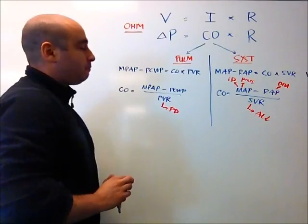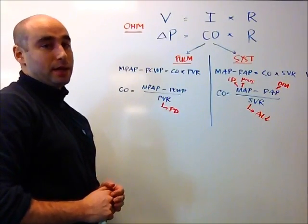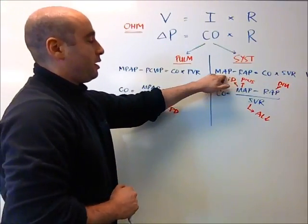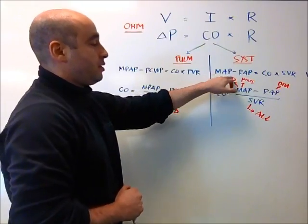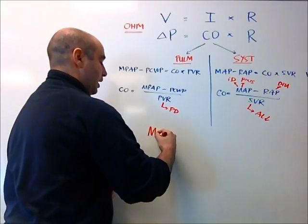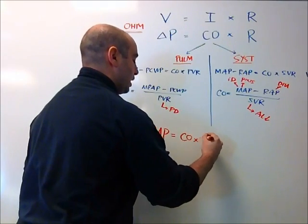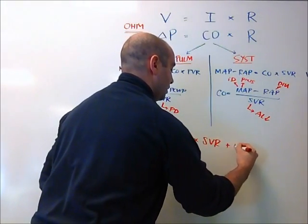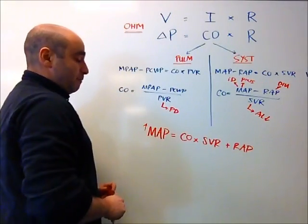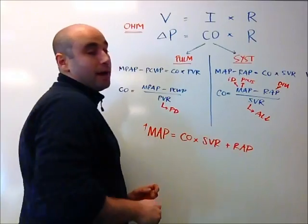One other interesting thing to look at while we're here is what happens to these patients when they become septic with distributive shock. So typically in distributive shock, we're trying to optimize the mean arterial pressure. We can use this same equation to solve for this term. Let's do that by moving across the right atrial pressure. That equation then becomes mean arterial pressure equals cardiac output times systemic vascular resistance plus right atrial pressure. So in terms of maximizing the MAP, we have three ways to do it. Increase the cardiac output, increase the SVR, or increase the right atrial pressure.